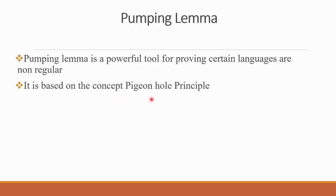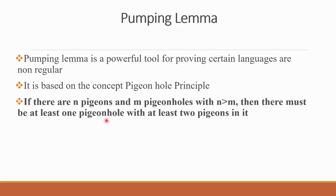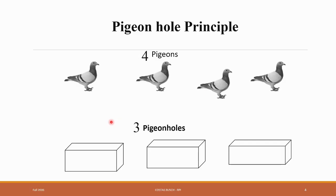The Pumping Lemma is based on the concept of the Pigeon Hole Principle. The Pigeon Hole Principle states: if there are n pigeons and m pigeon holes, with n greater than m, then there must be at least one pigeon hole with at least two pigeons in it. For example, if we have four pigeons and three pigeon holes, at least one hole must contain two pigeons.